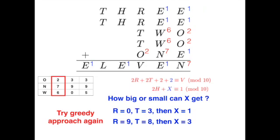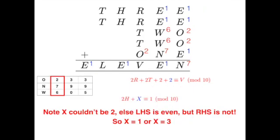Furthermore, if we want to maximize the carryover, we let R equals 9 and T equals 8, which will result in a carryover of 3. One important thing to note though is that X could only be 1 or 3, but not 2. Otherwise, if X is 2, then the left-hand side of the congruence is even, but the right-hand side isn't, since it ends in a 1.